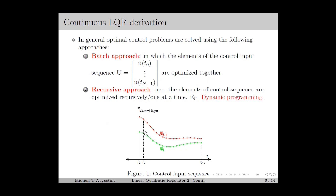Even though we are considering control signal in continuous time, the control level will mostly be implemented digitally. Therefore, in numerical solution of optimal control problems, the time horizon will be divided into a finite number of points, which we can denote as t0, t1, up to tN-1. Corresponding to each time instant, we can have the control input as u(t0), u(t1), up to u(tN-1), which can be stored in a vector u. In practice, the time duration between t0 and t1, which we denote as delta t, will be small. Our task is to find the optimal control sequence u* that results in the minimum cost.